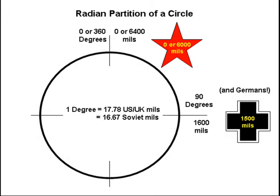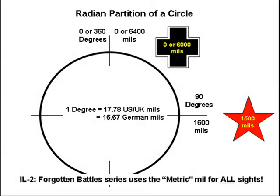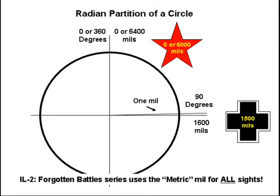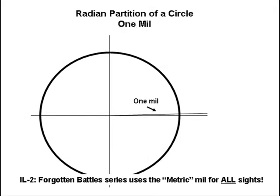Now the Soviets used 6,000 mils going around. It's the difference between yards and meters during World War II. But in practice, the difference is so small they're really interchangeable for our purposes, and we can use sights either way — it doesn't matter which kind of mils they used. One mil is pretty interesting because it's got some unique characteristics, so we're going to concentrate on what just one mil does.